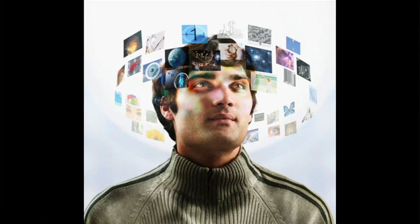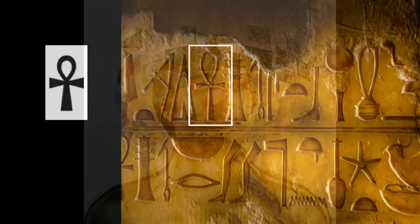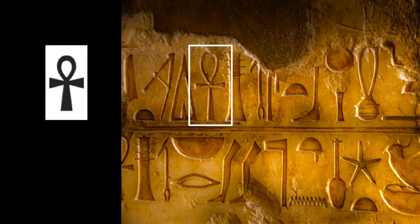But interestingly, most of the data that's online today is not really understandable to computers. It's in text, our emails, books, the web. And even though computers can search that text for keywords, they don't really understand the content of the documents any more than you understand this hieroglyphic when you search for this keyword in it.